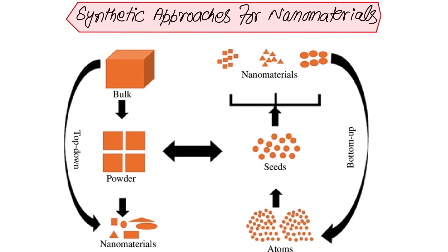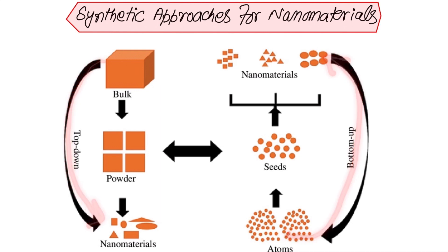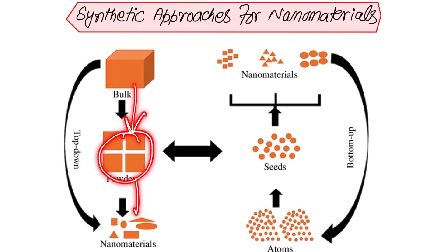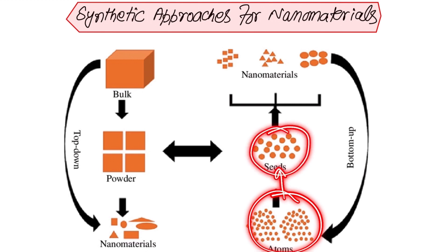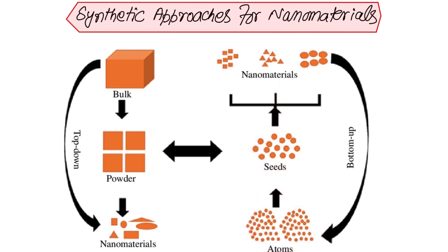The focus of this lecture is the synthesis of nanomaterials. There are basically two approaches: the first is called the top-down approach, and the second is called the bottom-up approach. In the top-down approach, we start with a material in bulk form, apply certain techniques to convert it into powder, and further process it to get nanomaterials. In the bottom-up approach, we start from atoms, which join together to form molecules or seeds, and these are rearranged to form nanomaterials.